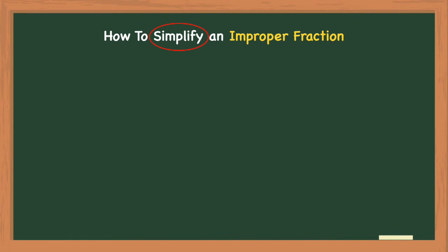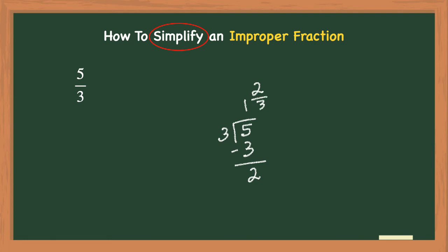So how do you simplify or reduce an improper fraction? Let's take a look at five-thirds. The fraction bar between the five and the three is actually an operation sign that means to divide. So I take five divided by three — three goes into five one time, and five minus three is two, so two is my remainder. That remainder of two becomes the numerator of my mixed number, and the denominator stays three. So five-thirds simplifies to the mixed number one and two-thirds.